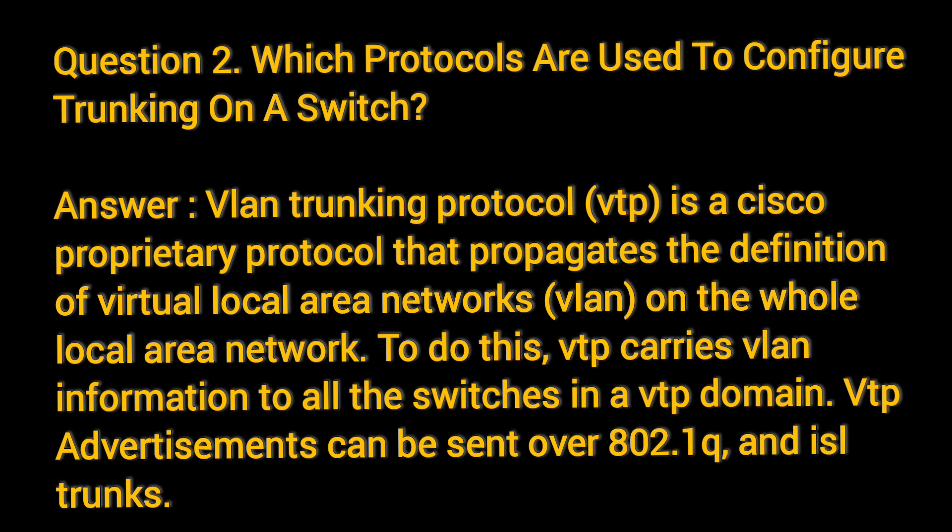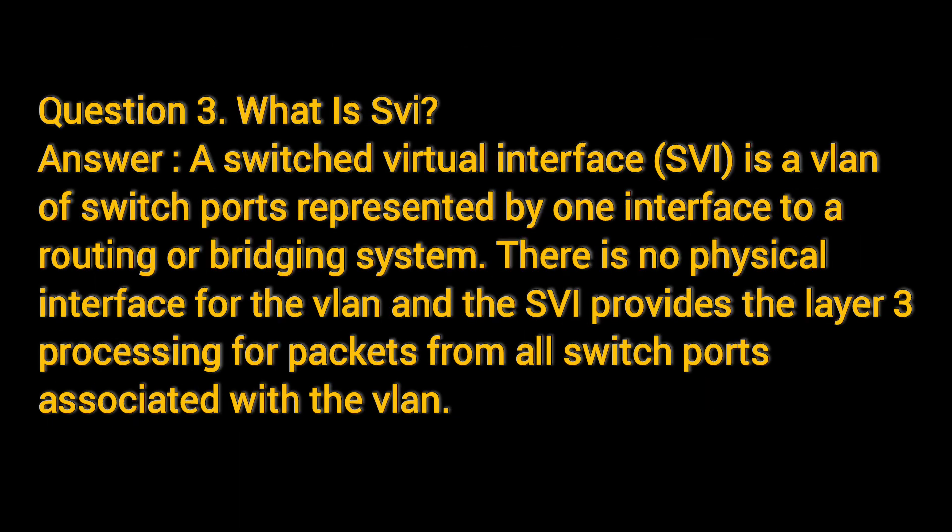VTP advertisements can be sent over 802.1Q and ISL trunks. Question 3: What is SVI? A Switched Virtual Interface (SVI) is a VLAN of switch ports represented by one interface to a routing or bridging system. There is no physical interface for the VLAN, and the SVI provides the Layer 3 processing for packets from all switch ports associated with the VLAN.